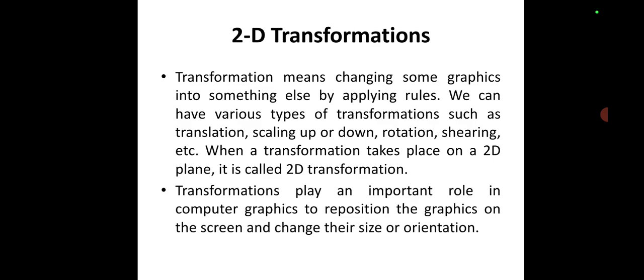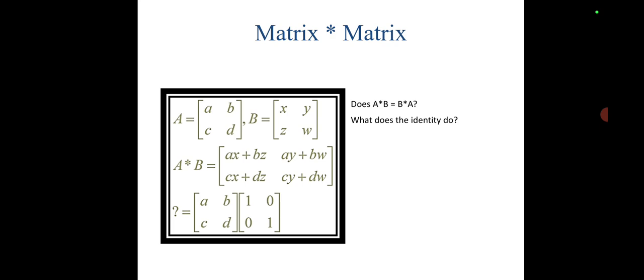Transformations are helpful in computer graphics as we are repositioning the graphics on a screen, either by changing the size or by changing their orientation. For matrix multiplication, we perform multiplication of two matrices by applying the rule: multiply each row with each column of the second matrix. These are needed for applying the rules for matrix multiplication in scaling, translation, and other 2D or 3D transformations.